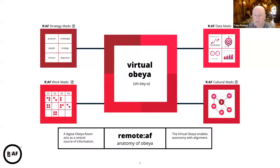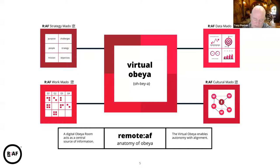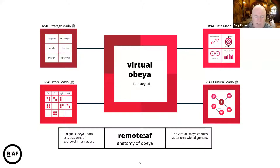We're going to talk to you about the virtual Obeyer. The virtual Obeyer sits within the RAF scheme of things. As we always say, it's about radiating information from the organization to the organization. It sits within our enterprise and our team of teams layers, but it can also sit at your normal team level and it informs all of those. It's made up of four zones that we call Mato - a Japanese word for window - because it really should be a window into that information for your organization.